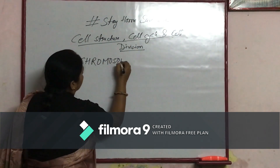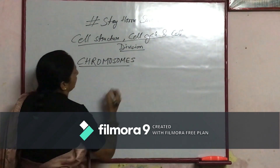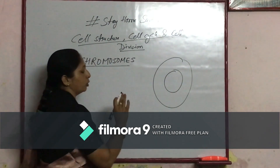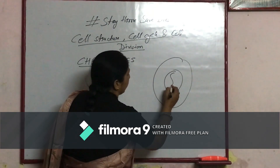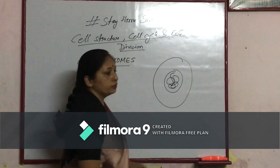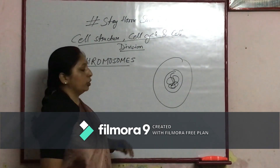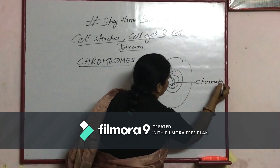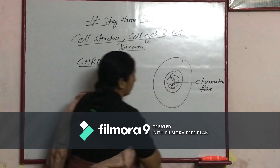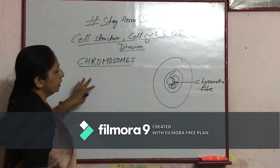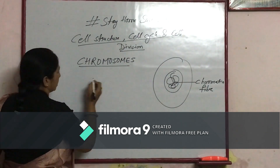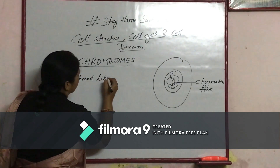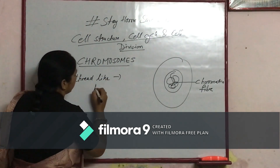Chromosomes. As you all know, in a eukaryotic cell there is a prominent nucleus. Inside the nucleus, thin thread-like structures are present called chromatin fibres. Before the cell division starts, these structures are thread-like. And this was discovered by Walther Fleming.